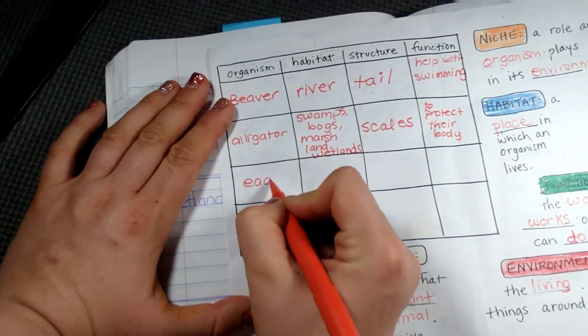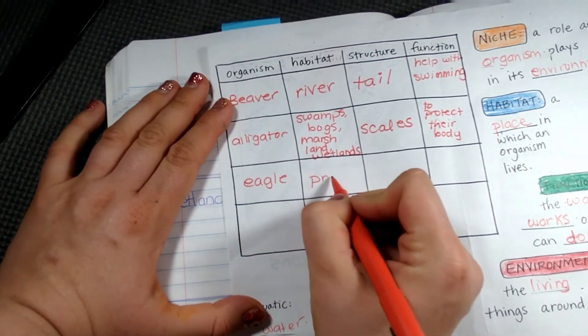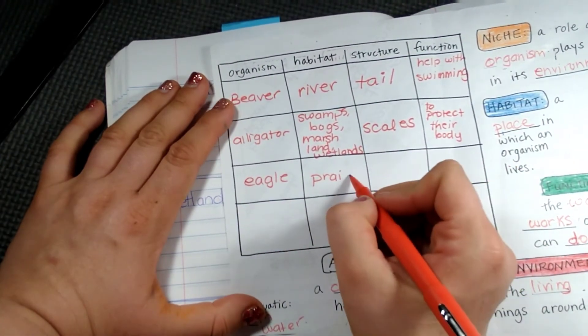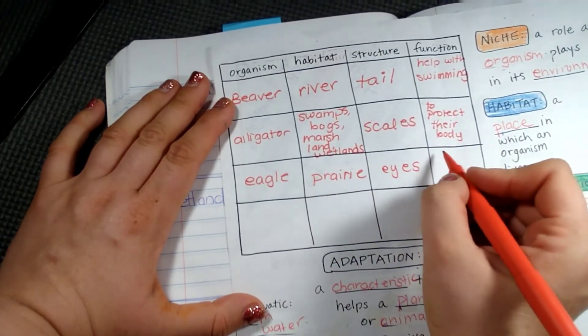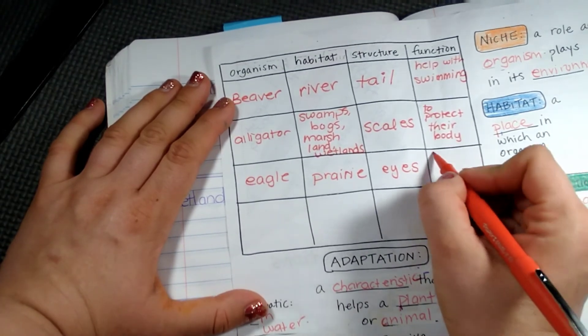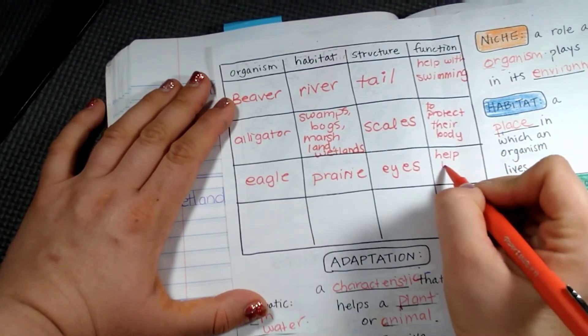How about an eagle? An eagle lives on a prairie. They have eyes that are very strong. What is its function? To help locate prey.